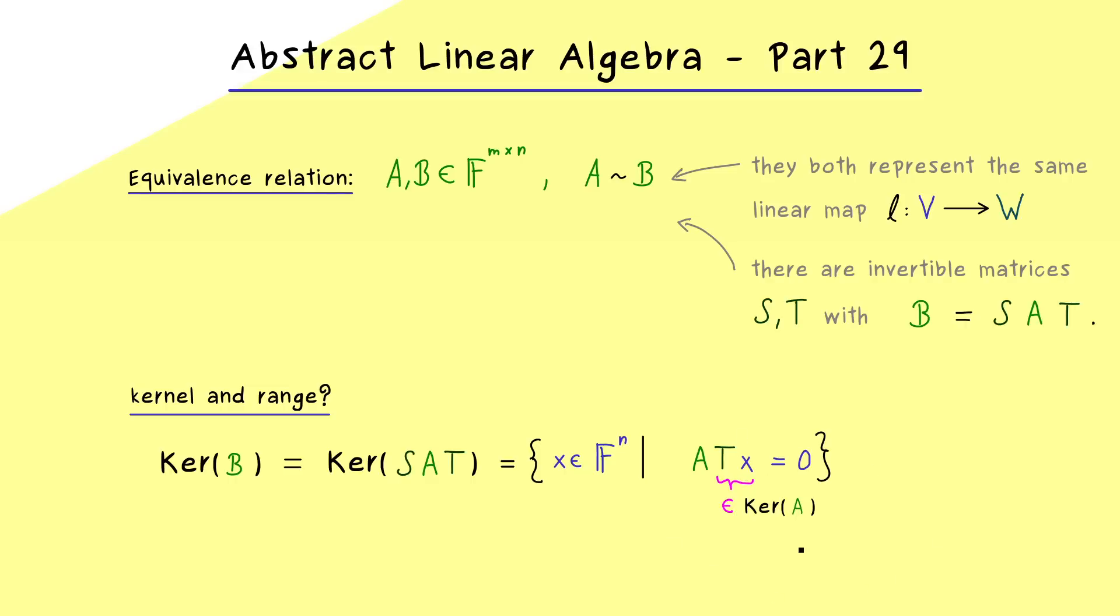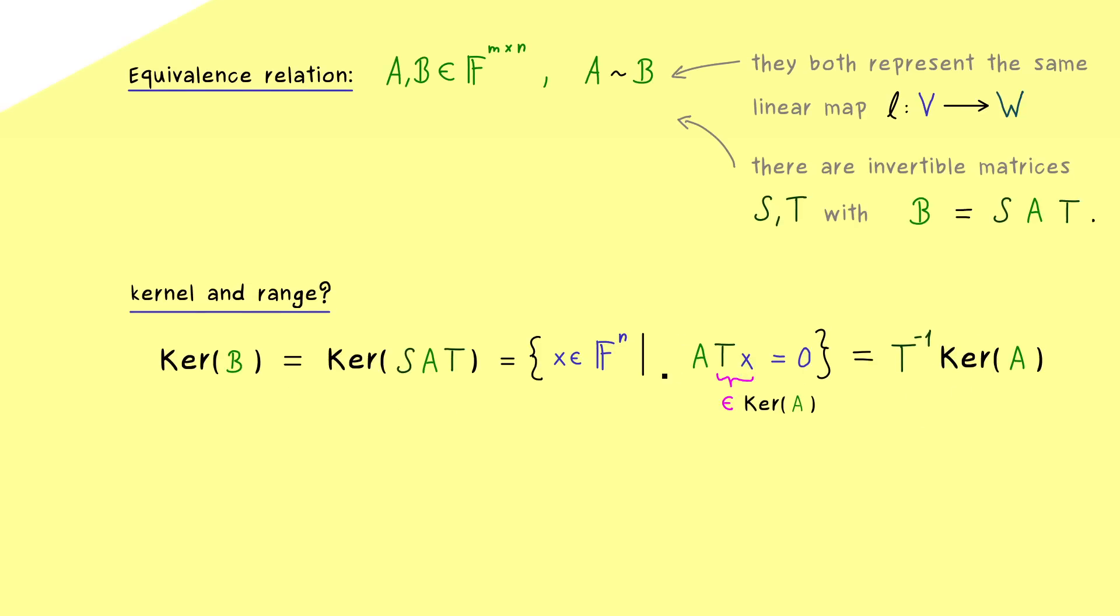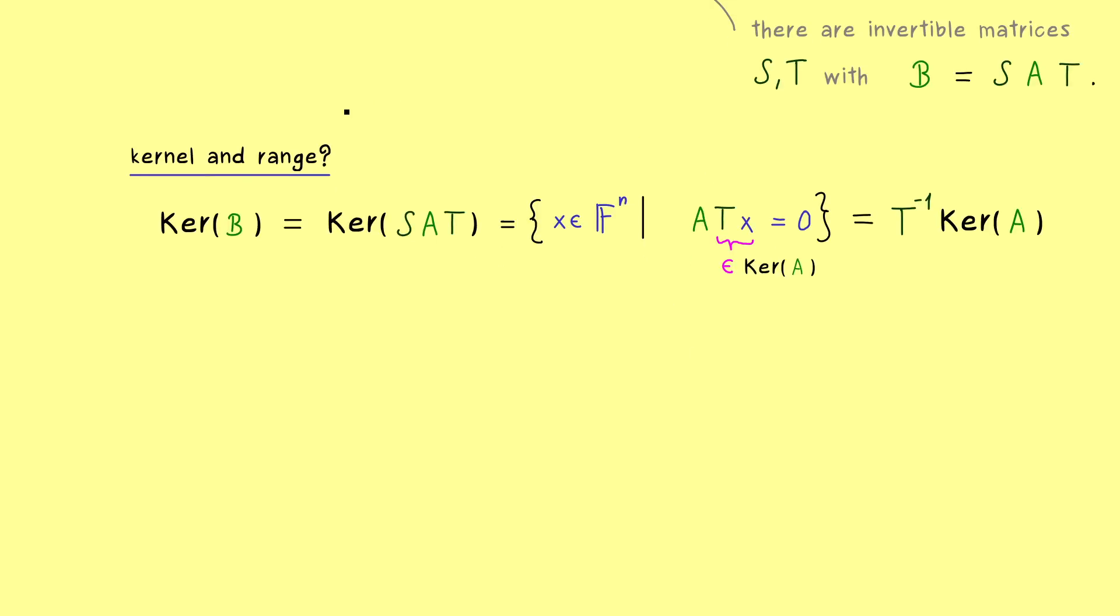Hence we recognize the relation between the two kernels. Each element in the kernel of A has a corresponding element in the kernel of B, and obviously the matrix T makes the connection here. So in short we could say the kernel of B is T inverse the kernel of A. Or vice versa, the kernel of A is T times the kernel of B.